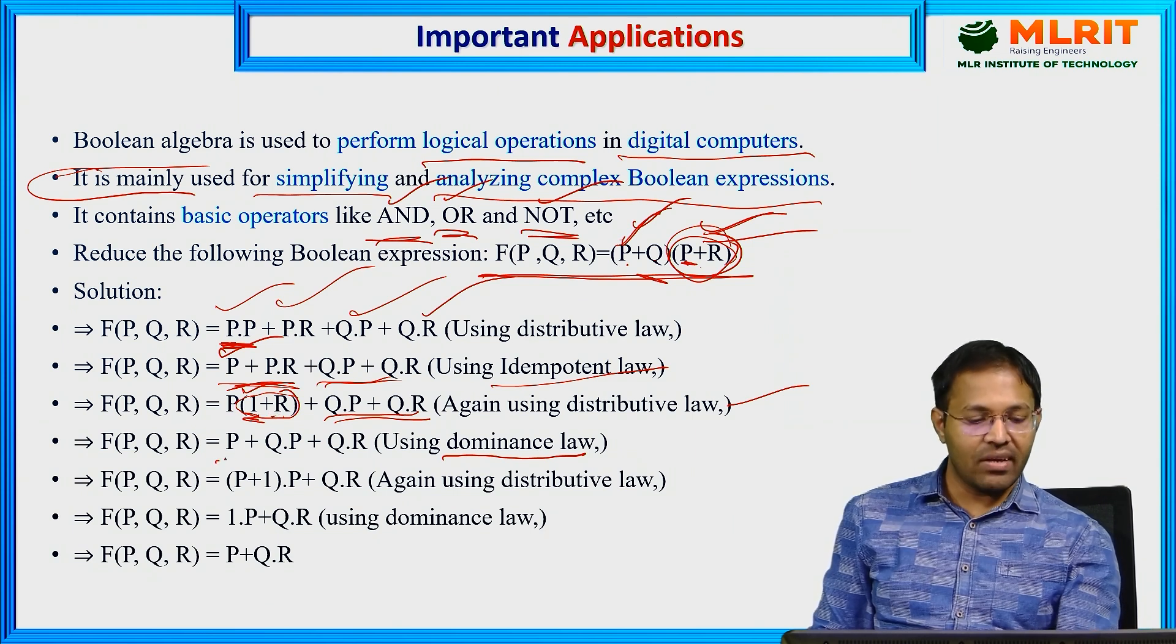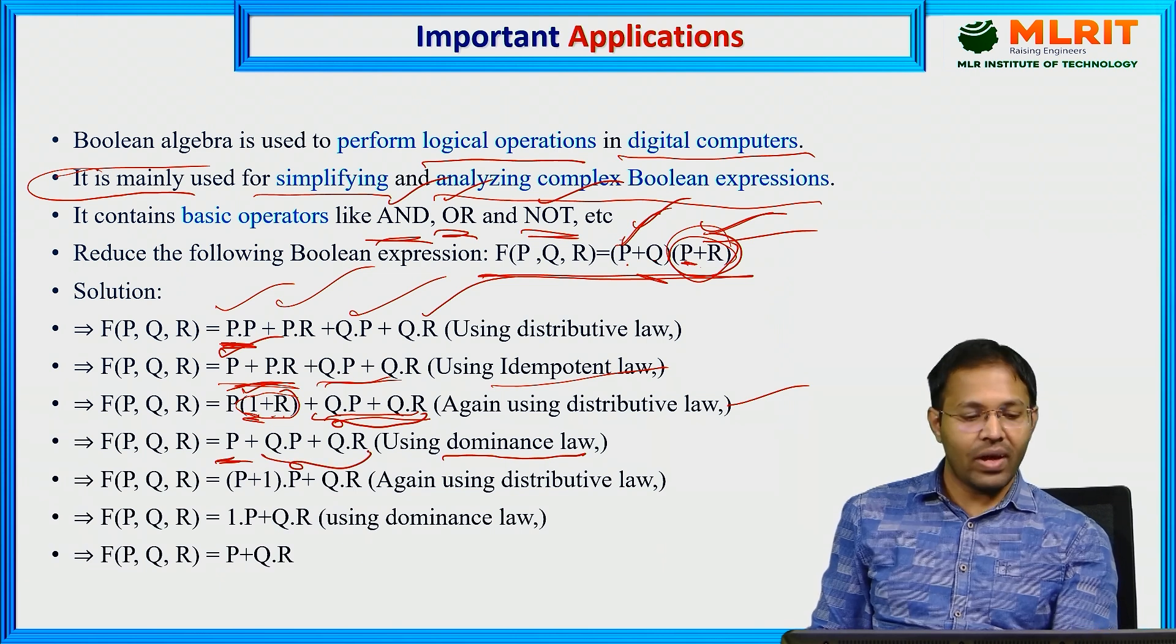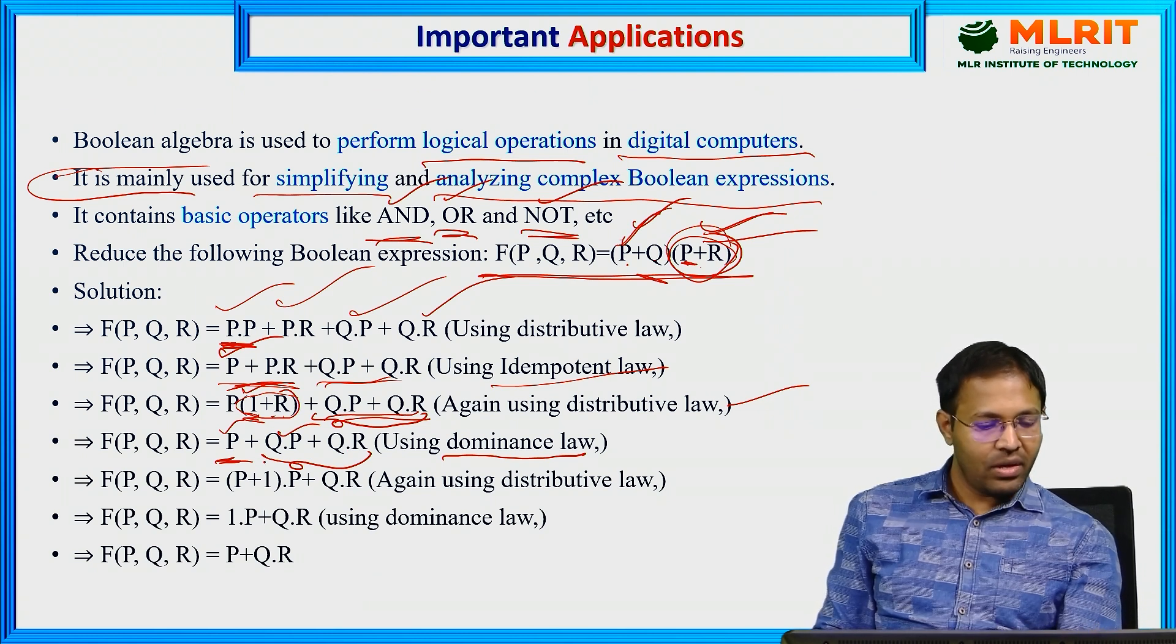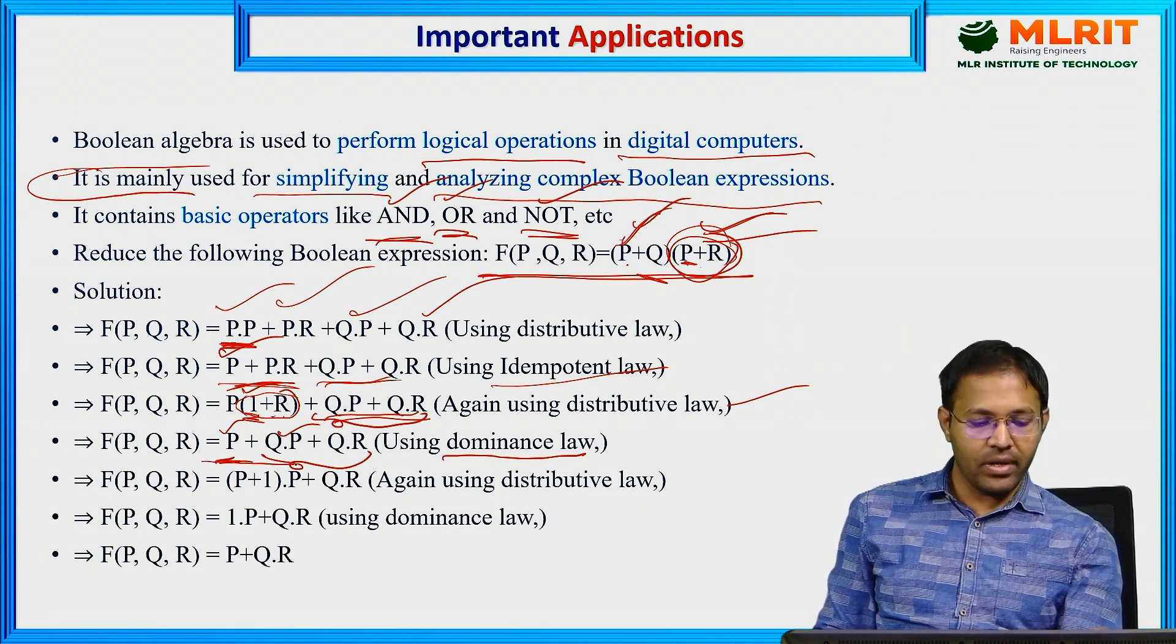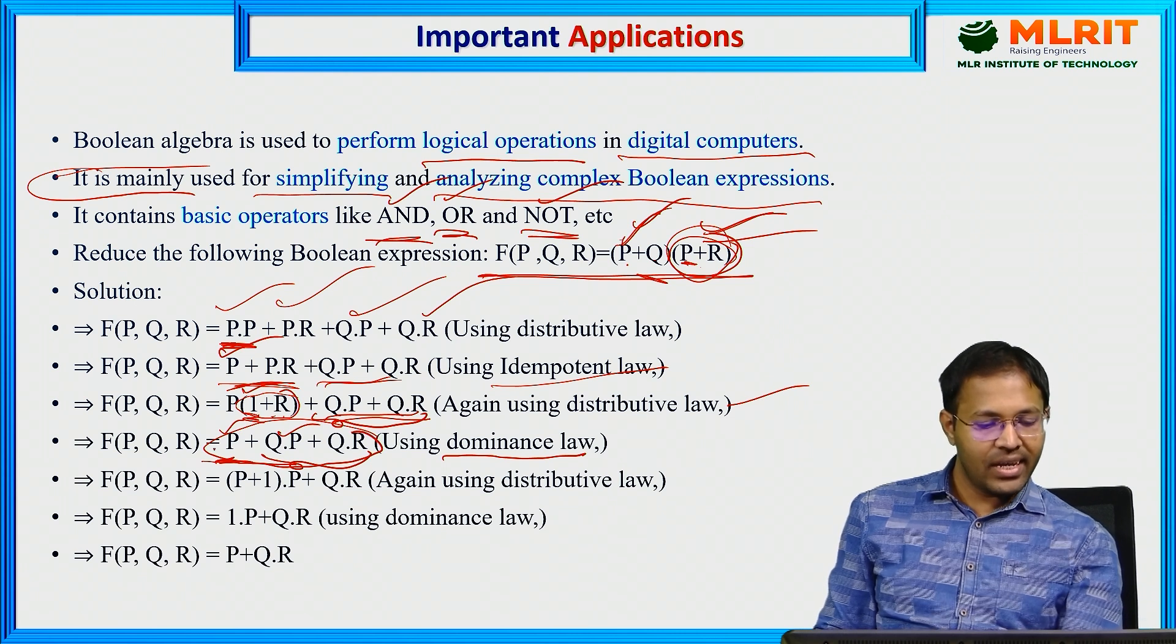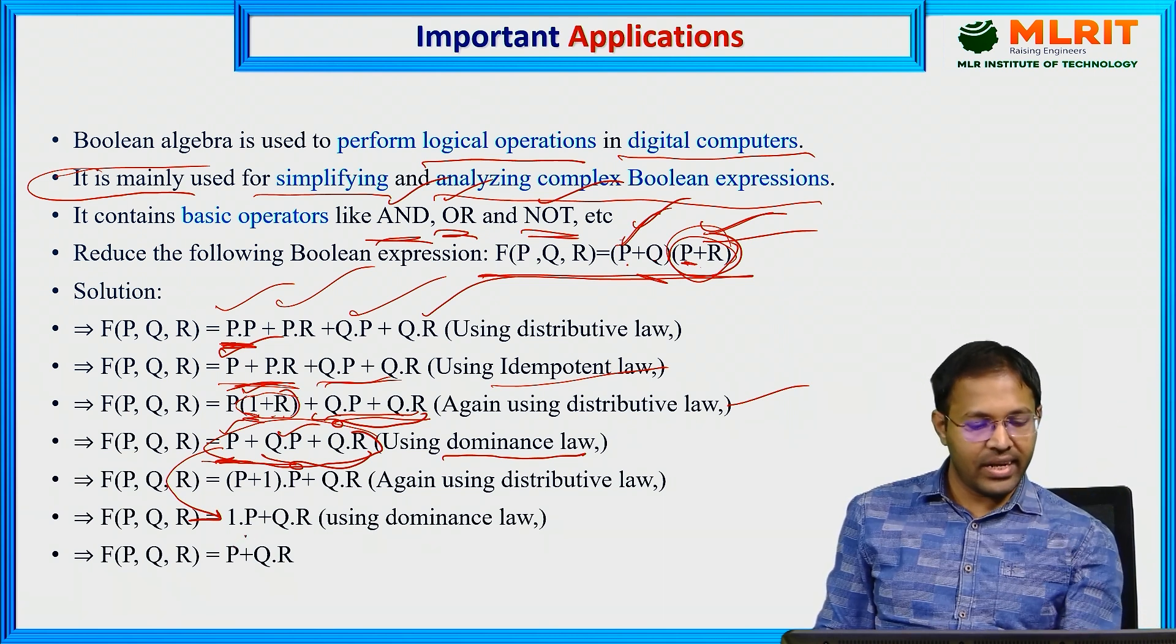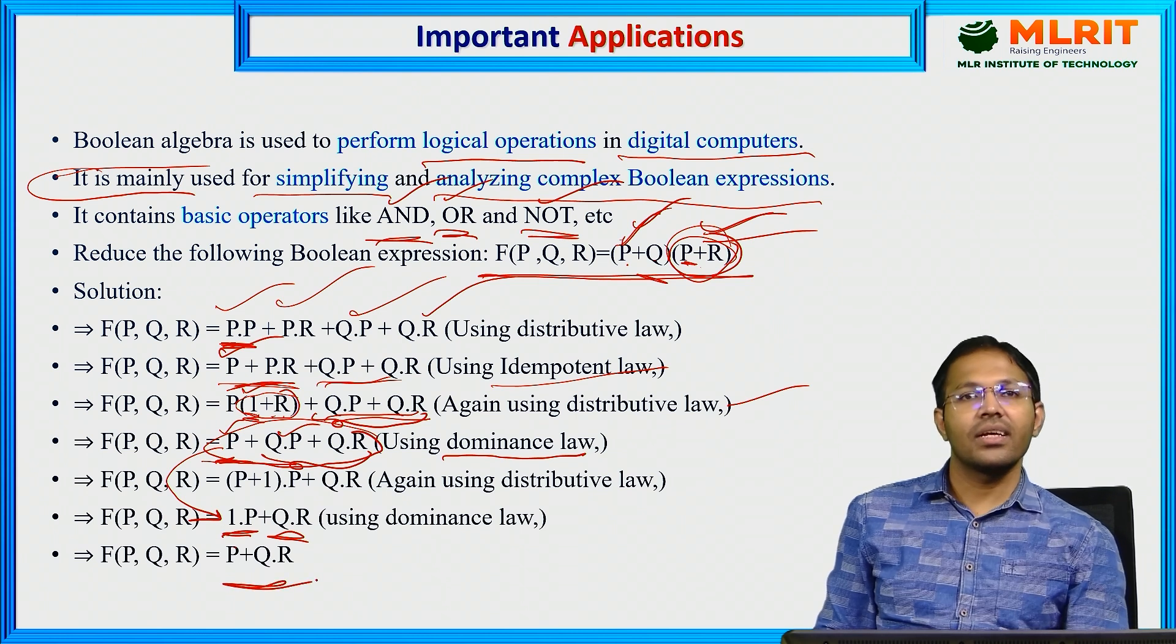These remaining two terms we are writing as it is. Now again in the first term and in the second term, we can take P common here. We can in fact take again P common. And ultimately, we can directly go to this step. If you take P common, you will be left out with 1. 1 plus anything again gives us 1. So you can get the P. Q R you can write and 1 into P again gives us P. This is the final result.